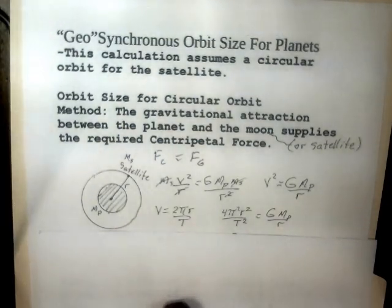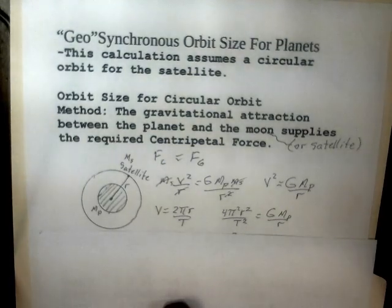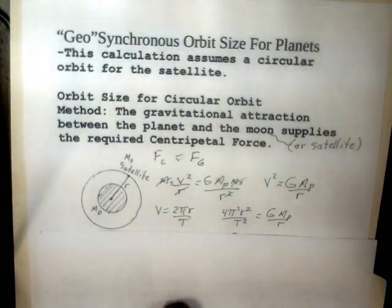On the right side, the force of gravity: capital G the constant of gravitation, the mass of the planet, mass of the satellite multiply together and divide by r squared. The mass of the satellite appears on both sides so I'll cancel that, and then one factor of r in the denominator on both sides is cancelled.